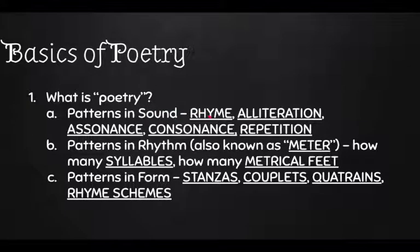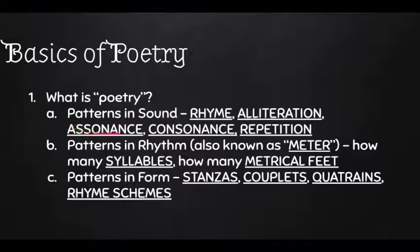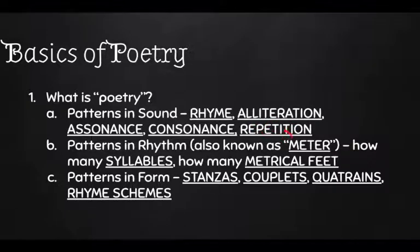First of all, what is poetry? How is it different than a newspaper article or a novel? Poetry — when we're writing poems and when we're reading them — we're looking for patterns. That's the main thing. It's patterns in sound, patterns in rhythm, and patterns in form. A pattern in sound can be a rhyme. Alliteration is when you start words with the same letter. Assonance is repeated vowel sounds in different parts of words. Consonance is when you're repeating consonants. And patterns in sound can just be repetition — if you repeat the same word over and over again, that's a pattern.